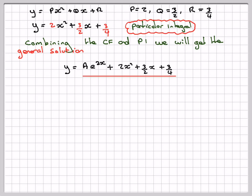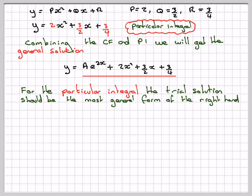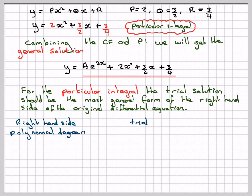The general solution. Now, for the particular integral, the trial solution should be the most general form of the right-hand side of the original equation. So, if the right-hand side is a polynomial degree n, the trial must be a general polynomial degree n. In the example, we had a polynomial degree 2 and we took the general polynomial of degree 2.